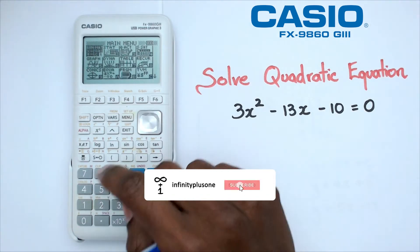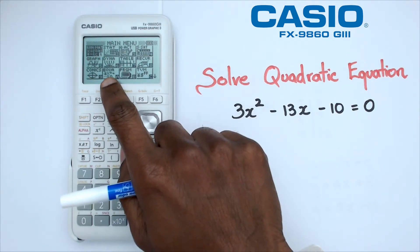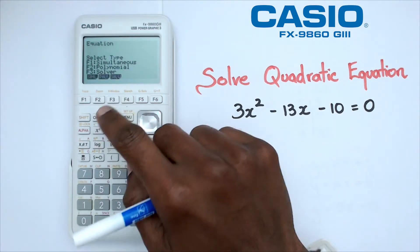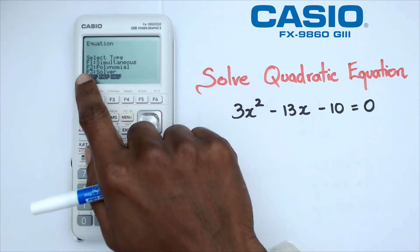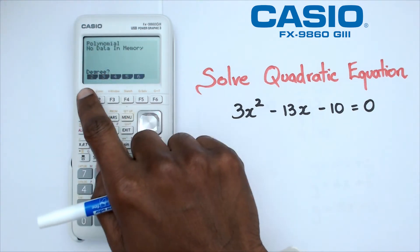The first thing we want to do is make sure that we go into the main menu, and under main menu we are going to go into the equation mode and click on EXE. At this point we're going to choose F2 which is polynomial, and it's going to ask you how many degrees.